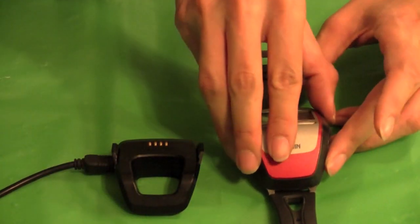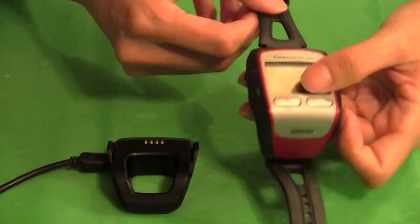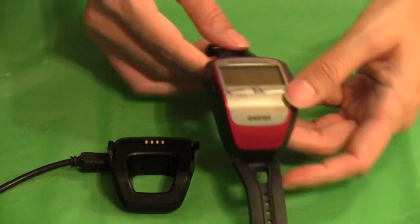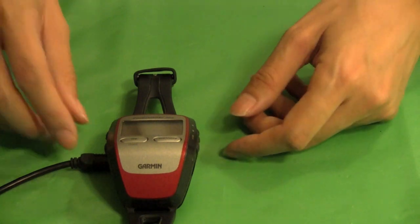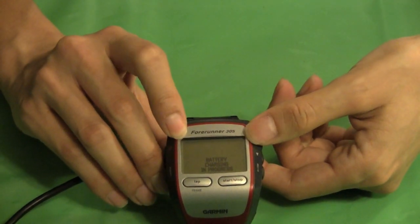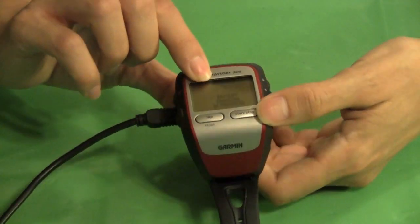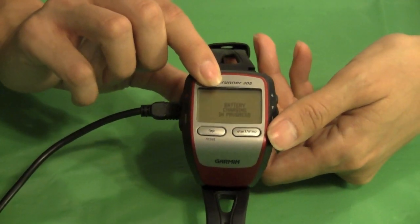Before I glue this watch back together again, I just want to test it out to make sure that the connection is good and that everything fits in perfectly. So I'm just going to put this on the charger for a second. If you notice it says battery charging in progress, which means that the watch is back together again and it is charging right now. So I'll let this charge up and then we'll glue the watch back together in the next step.